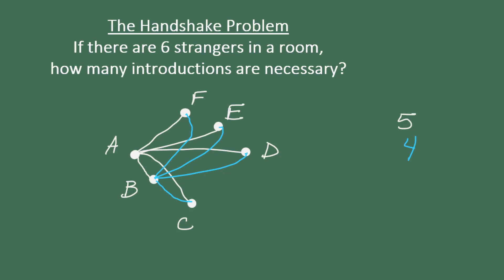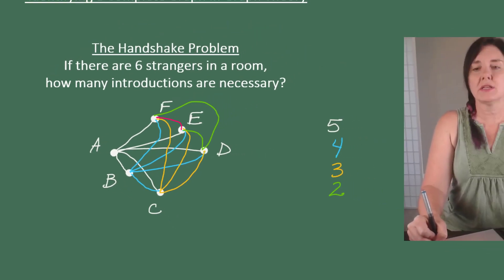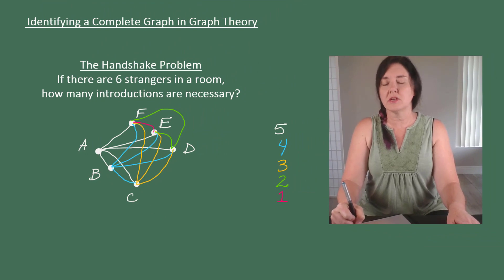And we're going to continue in this way. So person C still needs to meet persons D, E, and F. So that's three more introductions. Person D still needs to meet E and F. So that's two introductions. And finally, person E just needs to meet person F, and everyone has met. So that was just one more introduction.